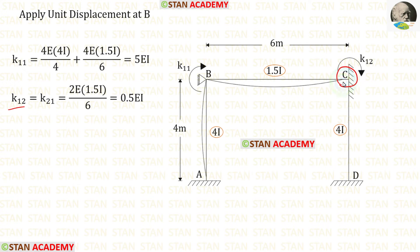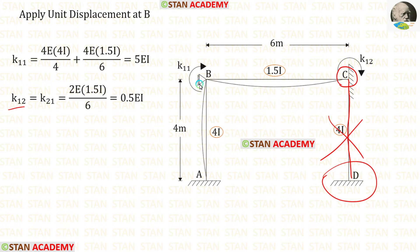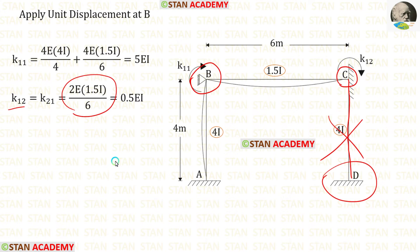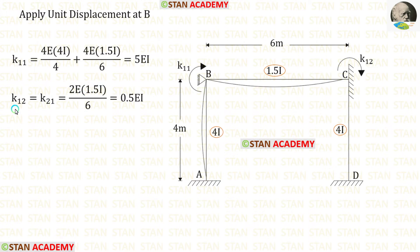Now let us find K12. From point C looking at other ends: for CD there is no slope at D, so we do not consider point D. Looking at the other end B — B has a hinged support, so we apply the formula 2EI/L with L = 6 and moment of inertia 1.5I. Finally, K12 = 0.5EI. The values of K12 and K21 are the same.